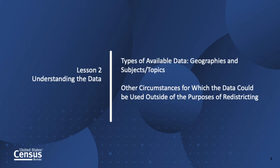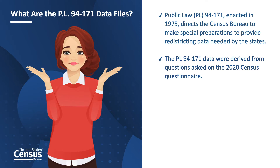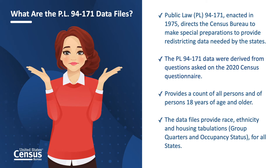Lesson two: understanding the data. Today you're going to learn what data are available in terms of geography and the subjects covered. You will also learn what other circumstances the data could possibly be used for outside of redistricting. Public Law 94-171 directs the Census Bureau to provide states the opportunity to identify small geographic areas for which specific data tabulations are needed, and deliver high-quality tabulations to the states in a timely manner for the purpose of legislative redistricting.